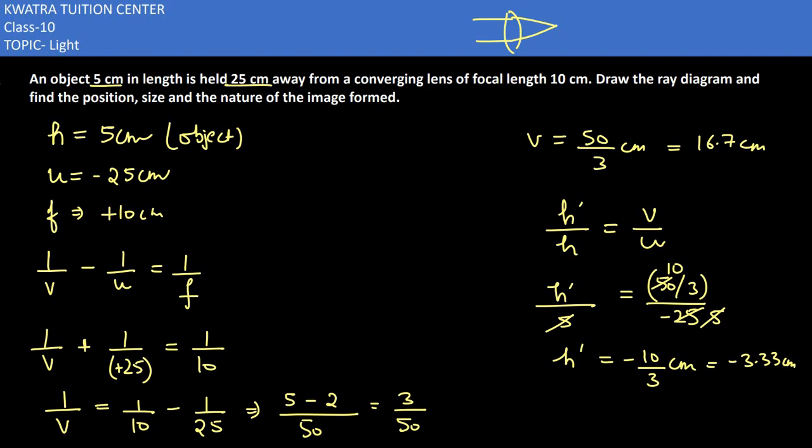If you want to create the ray diagram, how will you create the ray diagram? There would be a convex lens in between. Make the principal axis. Here u was given as 25. Mark 25. Place the object.